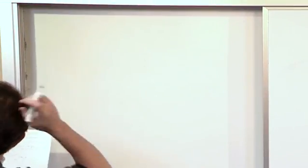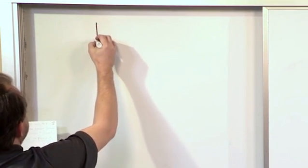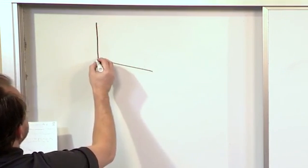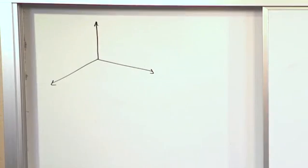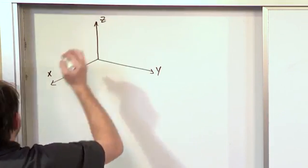So essentially what we have is, let me draw a picture. Pictures are worth a thousand words. Let me draw a picture and we'll talk about a moment about a specific axis. So let's draw our typical three-dimensional representation XYZ type of situation. Here is X, here is Y, and here is Z.